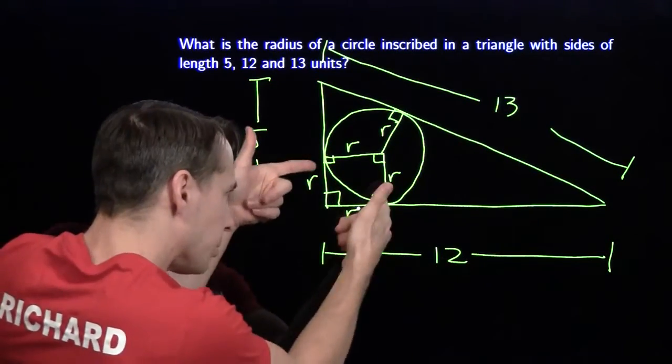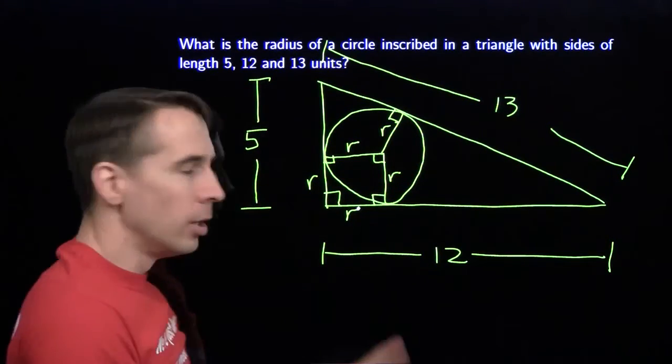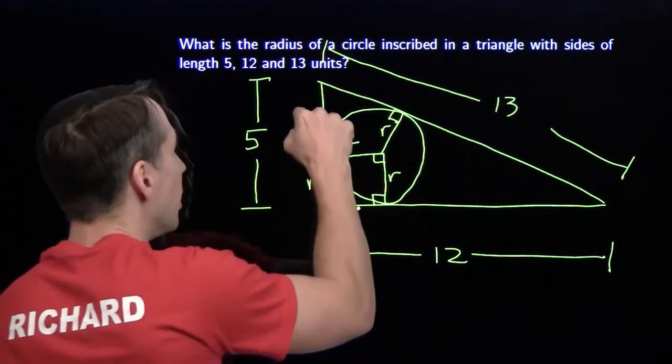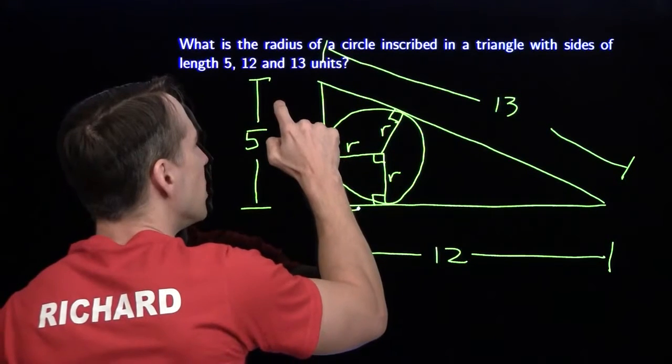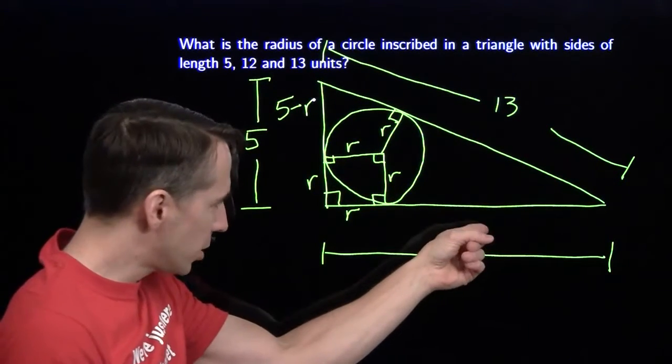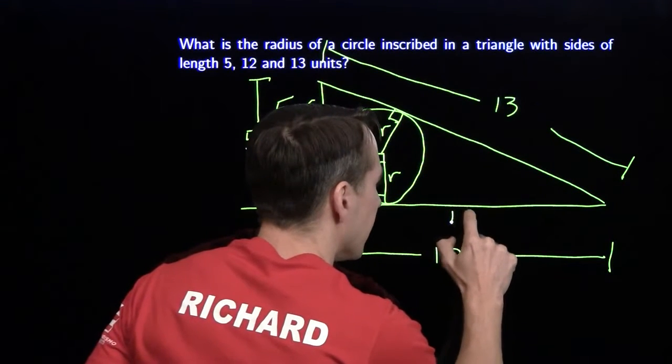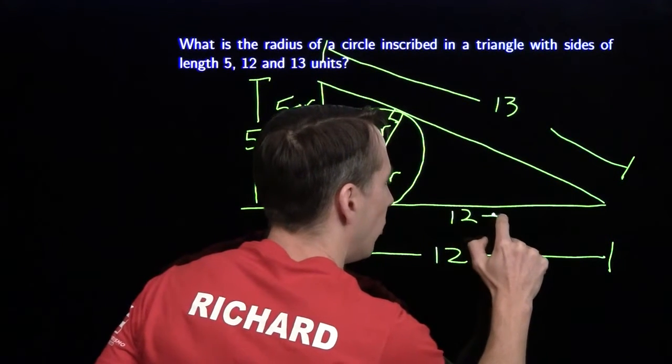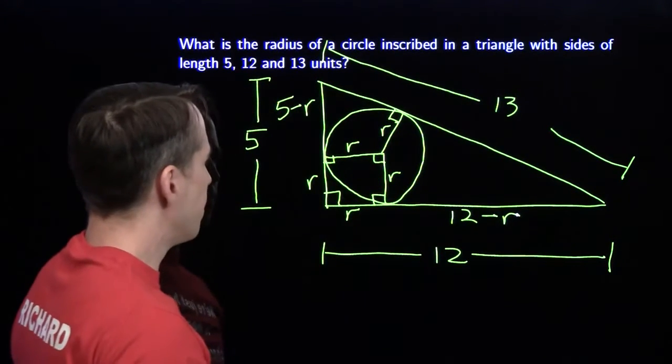Key strategy here is I'm just labeling everything as I figure it out. Once I figure out something new, I think, hey, do I know anything I can use with that? I see this r that I just discovered. I know that this whole thing is 5, so this up here is 5 minus r. Use that same strategy over here. Tells me that this length right there is 12 minus r.